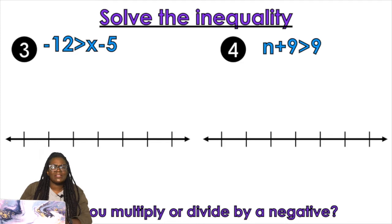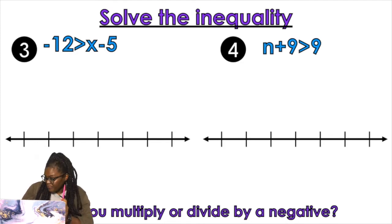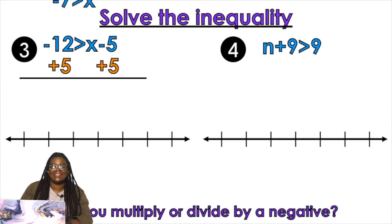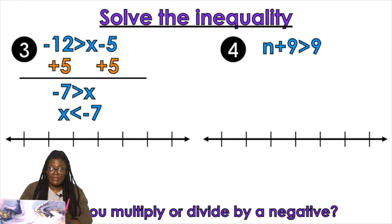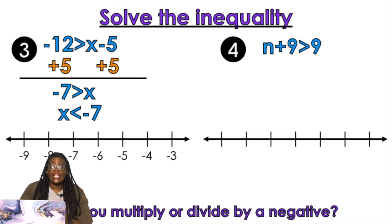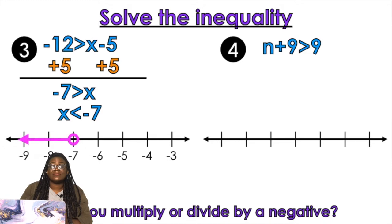Negative 12 is greater than X minus five. So I need to get X by itself — get rid of the minus five. Did you say add five? Correct. Add five to both sides and that gives me negative seven is greater than X. But remember the X is on the other side, so we flip it around: X is less than negative seven. Find negative seven on the number line — open circle. Left or right? Left.